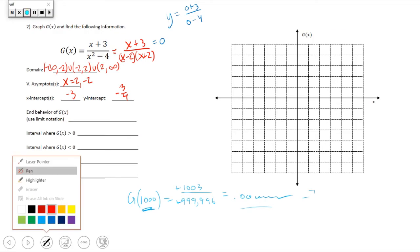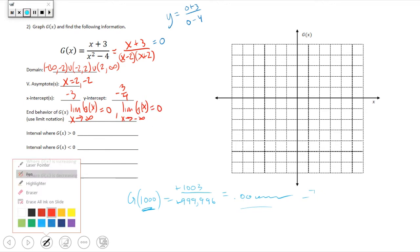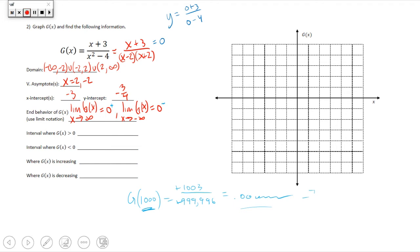In limit notation, the end behavior is: the limit of g(x) as x approaches positive infinity is zero, and the limit of g(x) as x approaches negative infinity is also zero. However, approaching from the negative side, g(x) approaches zero from below the x-axis (zero with a negative superscript), and from the positive side, g(x) approaches zero from above.